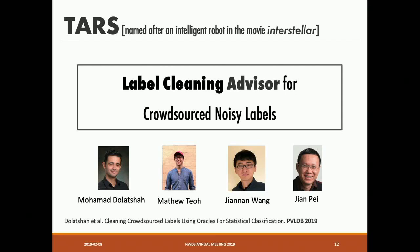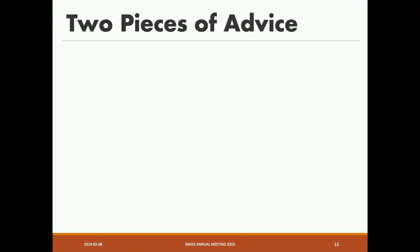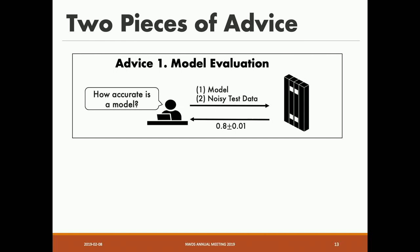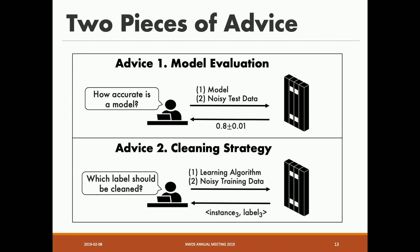We call our recent paper TARS, named after the intelligent robot in the movie Interstellar. At a high level, TARS provides data scientists two pieces of advice. First, given a noisy test dataset and a model, TARS estimates the true accuracy and provides a confidence interval to quantify uncertainty. Second, TARS tells data scientists how to clean the noisy labels so that they improve the model the most. Due to time constraints, I can't talk about the details, but we have a paper online.